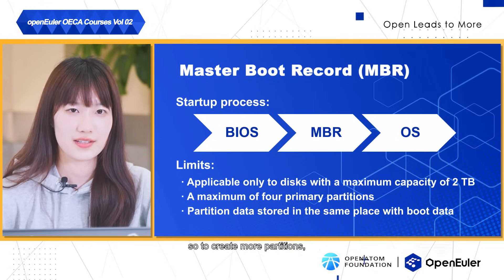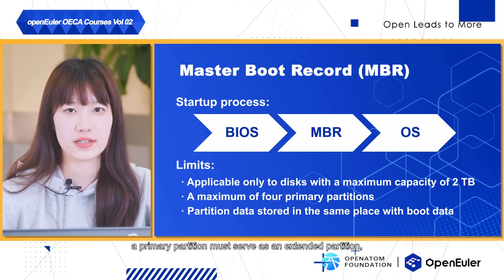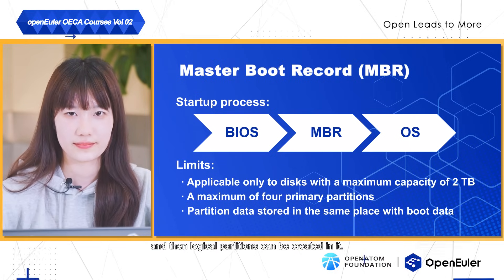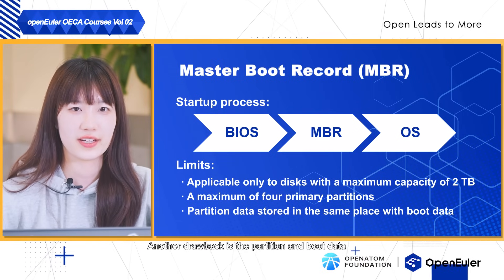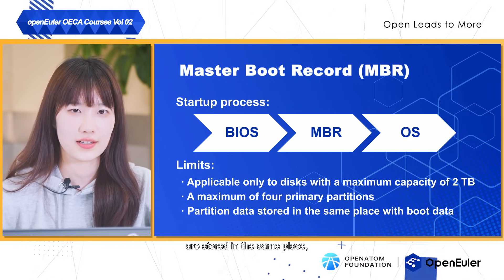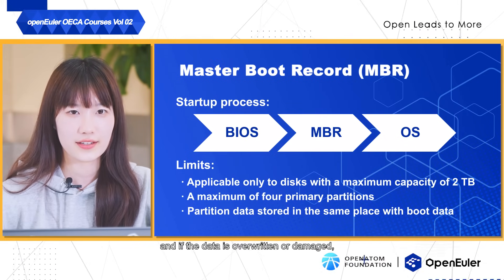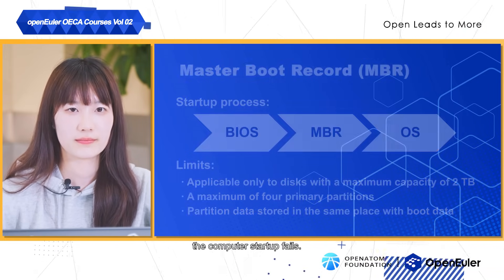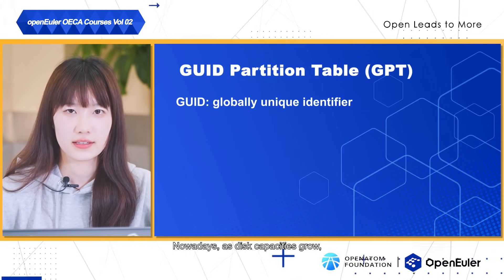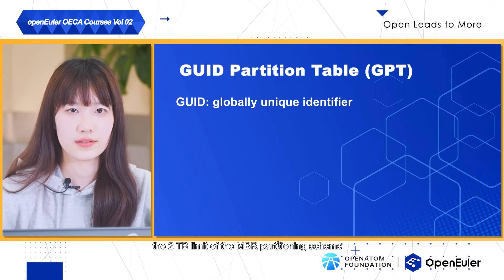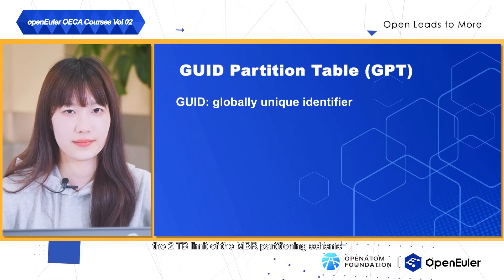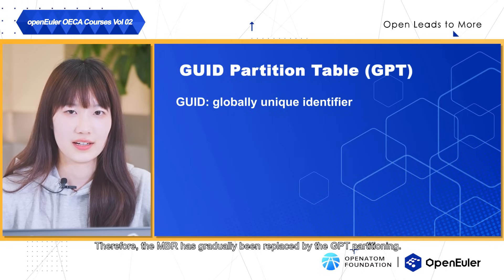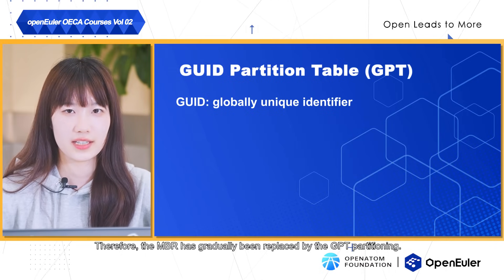So, to create more partitions, a primary partition must serve as an extended partition, and then logical partitions can be created in it. Another drawback is the partition and boot data are stored in the same place, and if the data is overwritten or damaged, the computer startup fails. Nowadays, as disk capacities grow, the 2 TB limit of the MBR partitioning scheme becomes a practical problem. Therefore, the MBR has gradually been replaced by GPT partitioning.